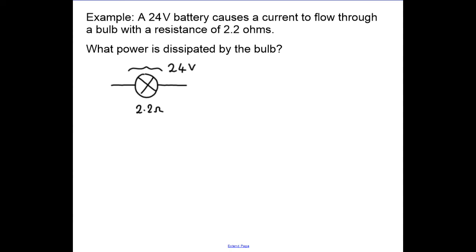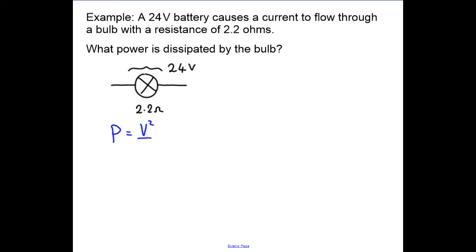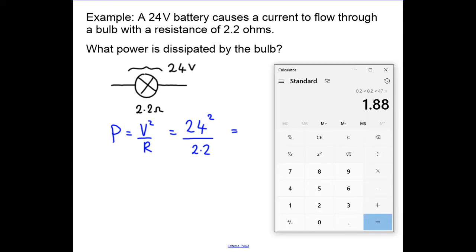We use the equation power equals V squared over R. That's 24 squared divided by 2.2, which is going to be quite a lot of power. Using the calculator, 24 squared divided by 2.2 equals...